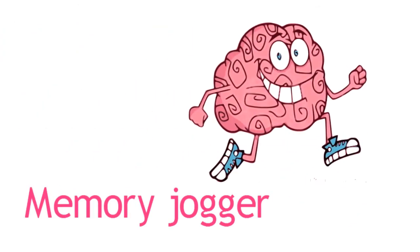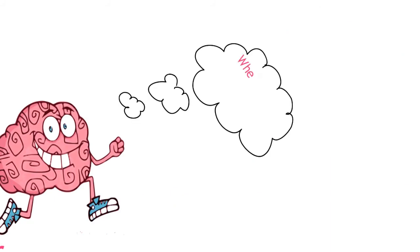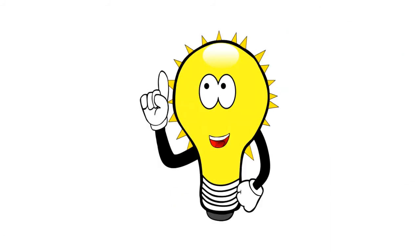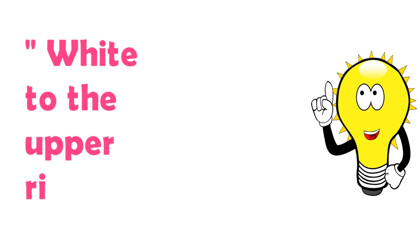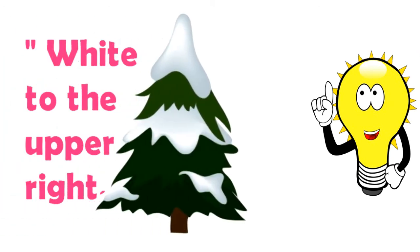To help you remember where to place electrodes in a 5-electrode configuration, think of the phrase white to the upper right, then think of snow over trees,